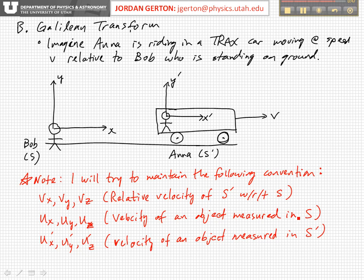Now, at time zero, Anna is going to release an object — she's going to throw an object which flies from the origin of her coordinate system to the right at speed U_x prime. So Anna is going to throw an object with speed U_x prime to the right — it's primed because it's relative to her. Then we're going to see how that velocity relates to what Bob sees.